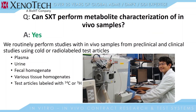We frequently get questions about performing metabolite characterization studies on in vivo samples, and we most certainly can do that. We routinely perform these studies from preclinical and clinical studies using cold and radiolabel test articles. Typical matrices that we work with are plasma, urine, fecal homogenate, and various tissue homogenates as needed. We work with carbon-14 and tritium radiolabel test articles.